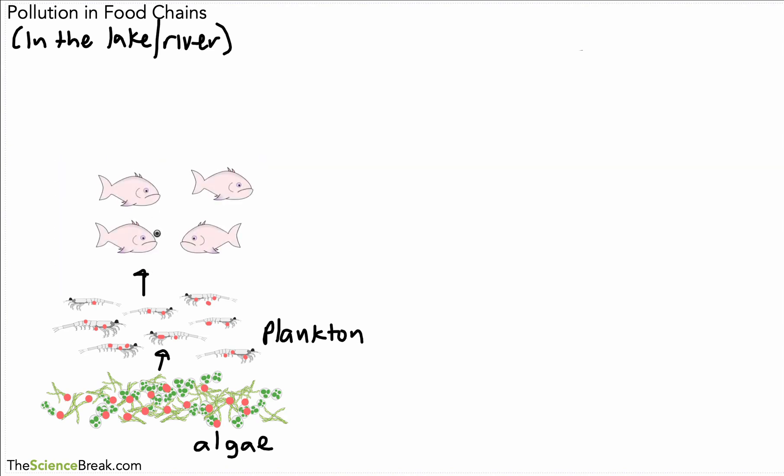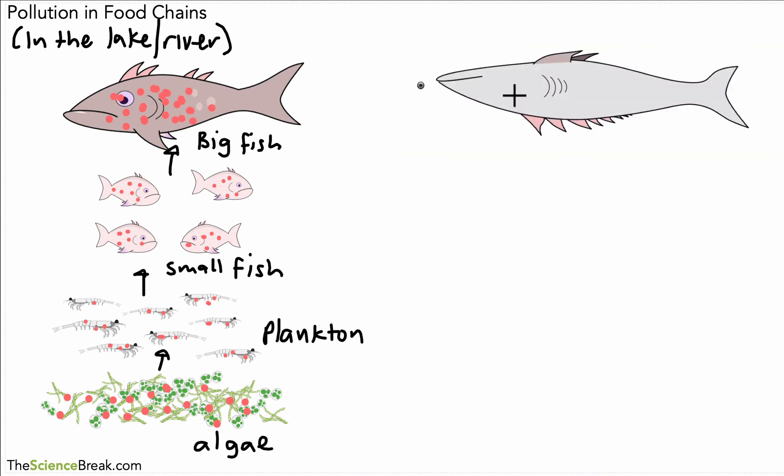The plankton will be eaten by some small fish. Here's our small fish. And then they are going to get the insecticide in their bodies. These small fish in turn could possibly be eaten by some bigger fish. There's a bigger fish that eats the smaller fish. And as you can see, there is now even more of that insecticide in the body of that bigger fish.